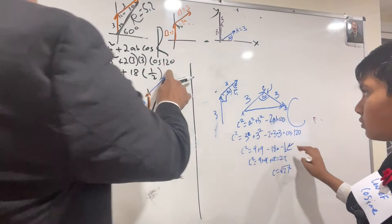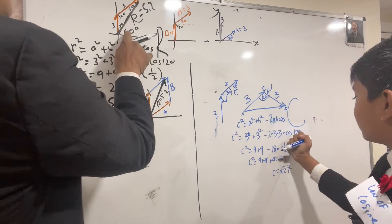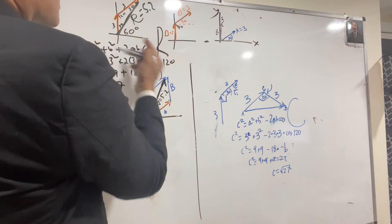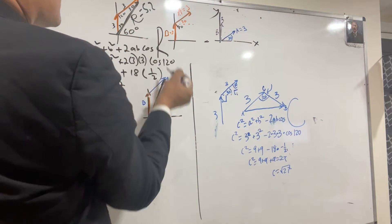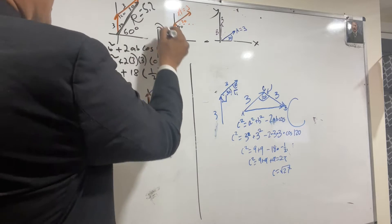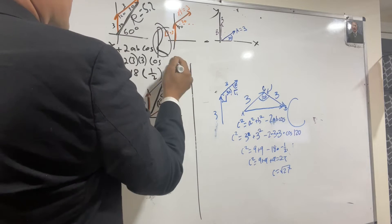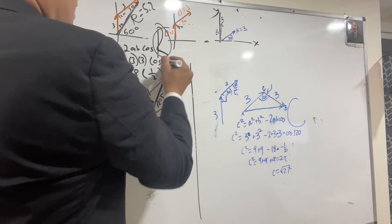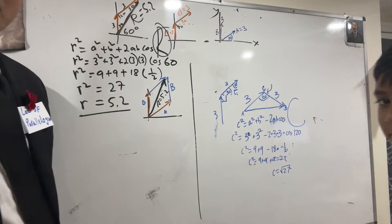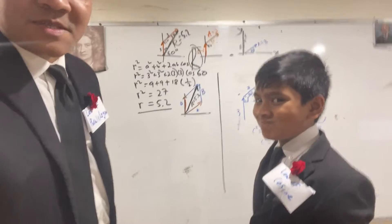Cosine 60 — I should have written cosine 60. I'm an idiot. That's right. This is why they say... I wrote cos... This is R, and R is 60. Damn. R is 60. Alright. That was the mistake.